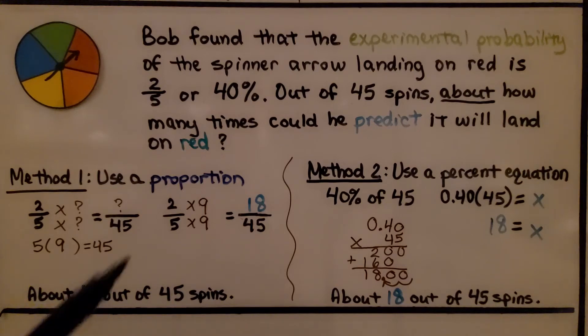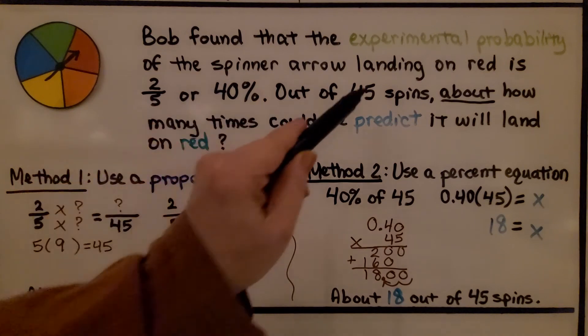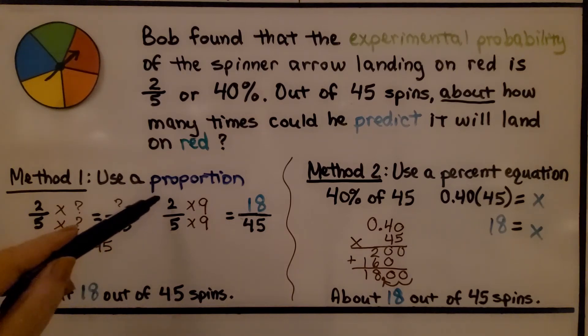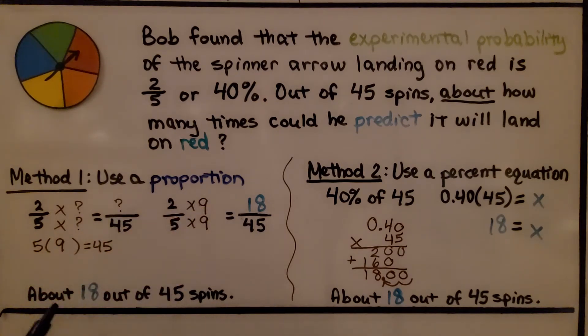We have 2/5 of 45, or 40% of 45. For 2/5, we need to have this denominator match 45. We know 5 times 9 is 45, so we need to multiply the numerator by the same thing. We have 18/45. That tells us about 18 out of 45 spins will land on red.